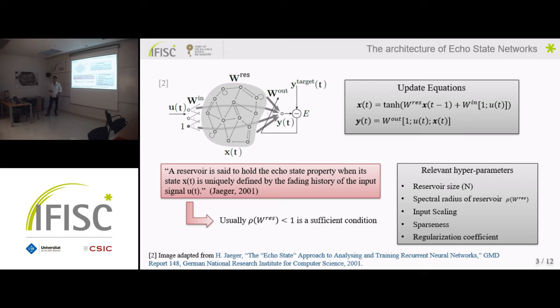But there is one that is particularly interesting, which is this spectral radius of the reservoir weight matrix. Spectral radius is just a fancy name for the maximum absolute eigenvalue of this matrix. And it's particularly interesting because, as Jaeger pointed out in his work, a reservoir is set to hold the echo state property when its state XT is uniquely defined by the fading history of the input signal. What this echo state property means is that if our network has this property and there is no input arriving, then eventually the states of the reservoir should fade out. Whereas if we don't have this echo state property, we might have some intrinsic dynamics inside the reservoir and we can find fixed points or chaos or limit cycles in the dynamics of the reservoir independently of the input. And what I want you to remember from this slide is that usually a sufficient condition to ensure the echo state property is that the spectral radius of this weight matrix is smaller than one. So we are going to be using that later.